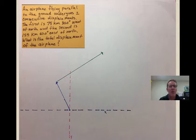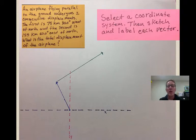Okay, so here's our problem. We have an airplane flying parallel to the ground, and it undergoes two consecutive displacements. The first is 75 kilometers, 30 degrees west of north. So, they kind of worded that a little bit funny. So, you need to pay attention to what comes first in that description. And when we get into drawing or sketching our vectors, that will become more clear. And then we have a second displacement vector of 155 kilometers, 60 degrees east of north. Again, the wording is kind of funny, and you have to pay attention to the wording. And so, we want to know the total displacement of the airplane.